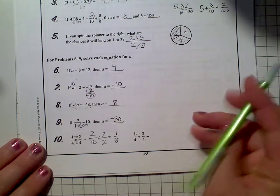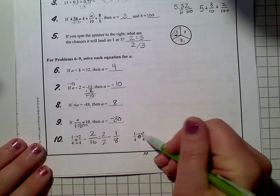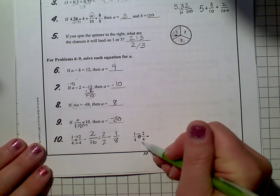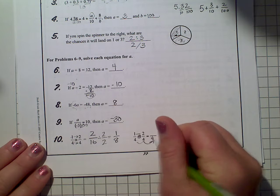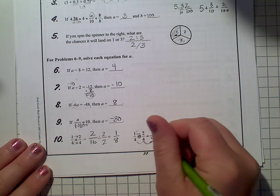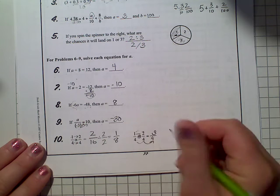Here, this is addition. So if the denominators are the same, you carry that over, and you add the numerators. So 1 plus 2 is 3, and that's its simplest form.